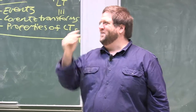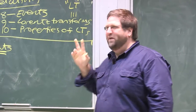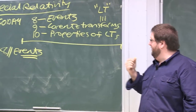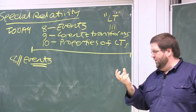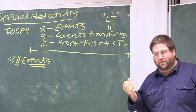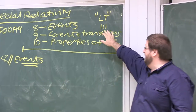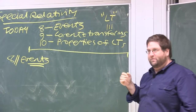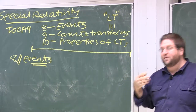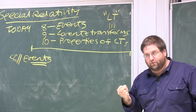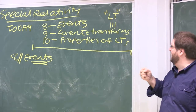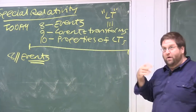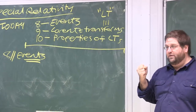Hello and welcome. Today we're going to do three things. First, look at the idea of an event, one of the most basic constructs in relativity and in fact in physics. We'll then look at the famous Lorentz transformation, a key result from special relativity. Lastly, we'll begin to investigate some properties of Lorentz transformations.